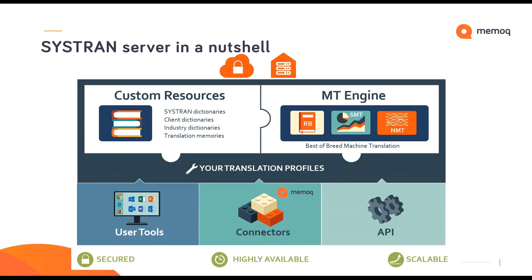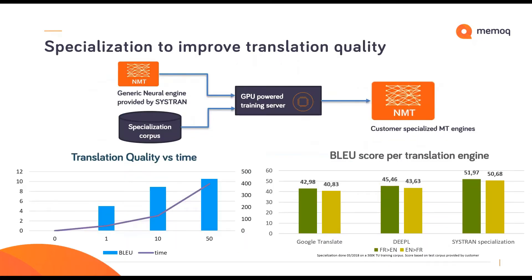The solution is secured — we provide on-premises installation, meaning you can have your neural network working for translation behind your own firewall. The solution is also highly available and scalable, which is important if you want to work with big data and have a lot of data to process.